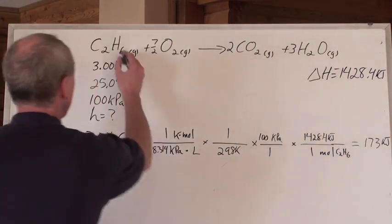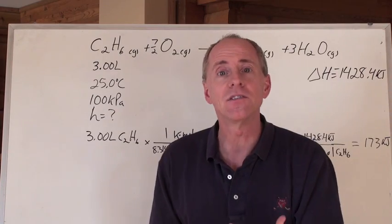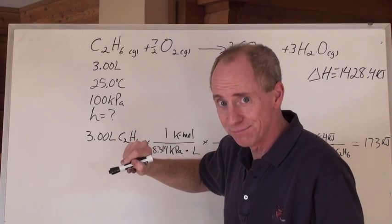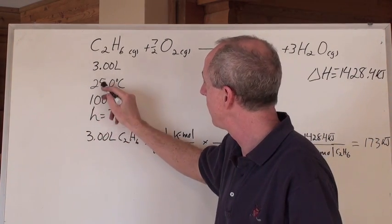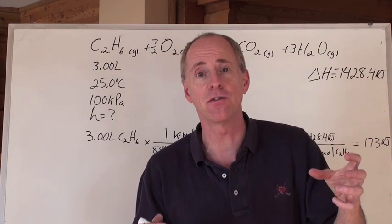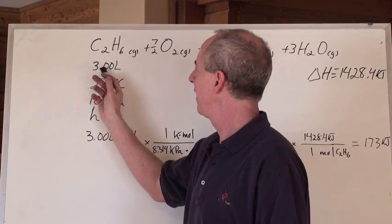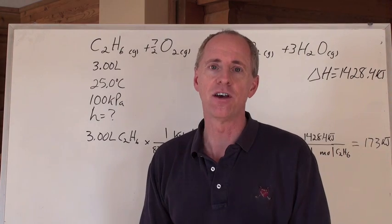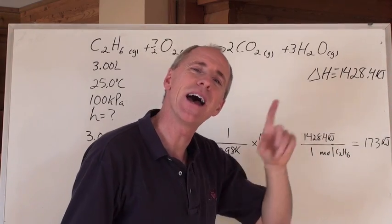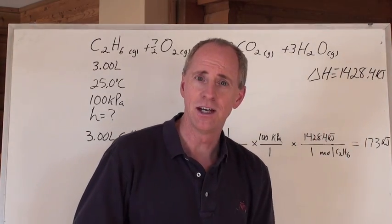173 kilojoules to 3 significant digits, because that's what I've got here. Does that make sense? Does that number make sense? Guys, I think it makes sense. Here's why. Because, you know what? Do you remember, in conditions where we have SATP, that's Standard Ambient Temperature and Pressure, of which 100 kPa and 25 degrees Celsius are the numbers, 24 liters, 24.8 liters of a gas, is one mole of gas. One mole occupies 24.8 liters. This is way less than 24.8 liters. It's actually about an eighth of a mole, then. What's about an eighth of that number? Well, actually, that number right there. So, it actually makes sense. 173 kilojoules. That's beautiful, isn't it? What great stoichiometry to be able to get that answer.